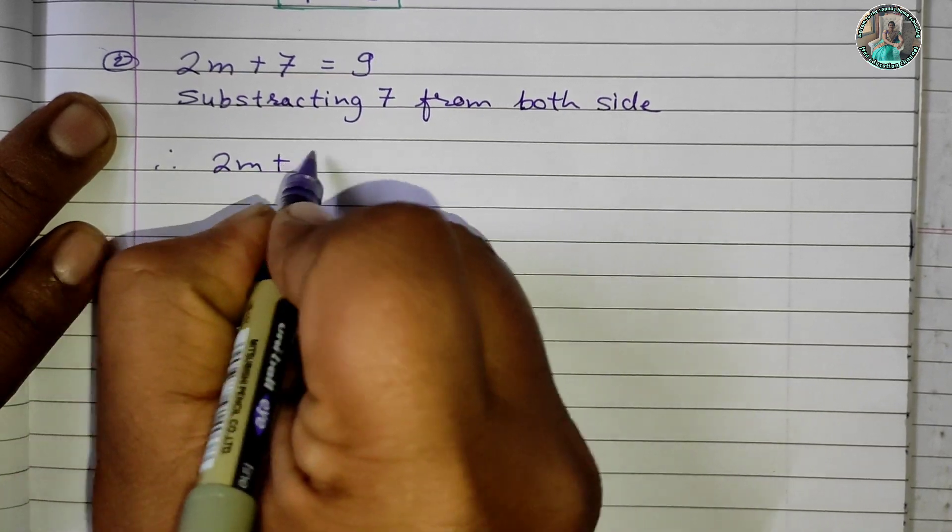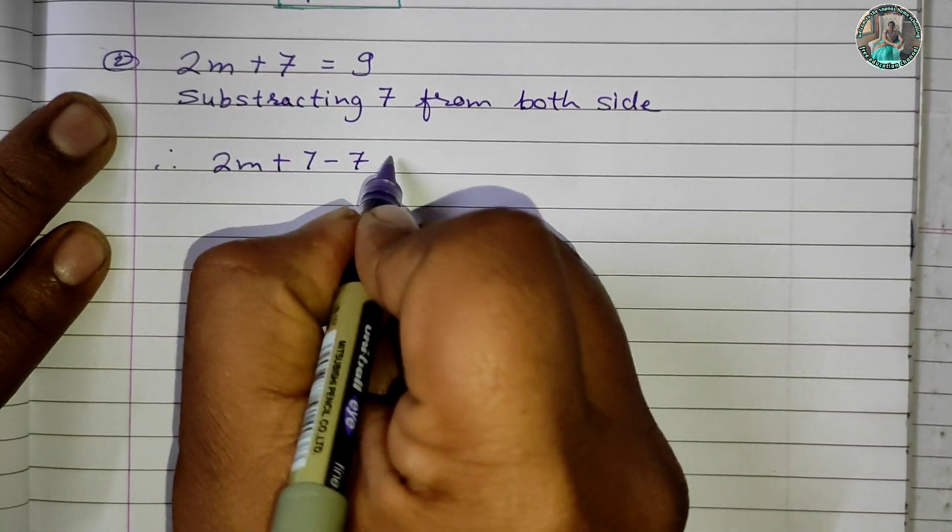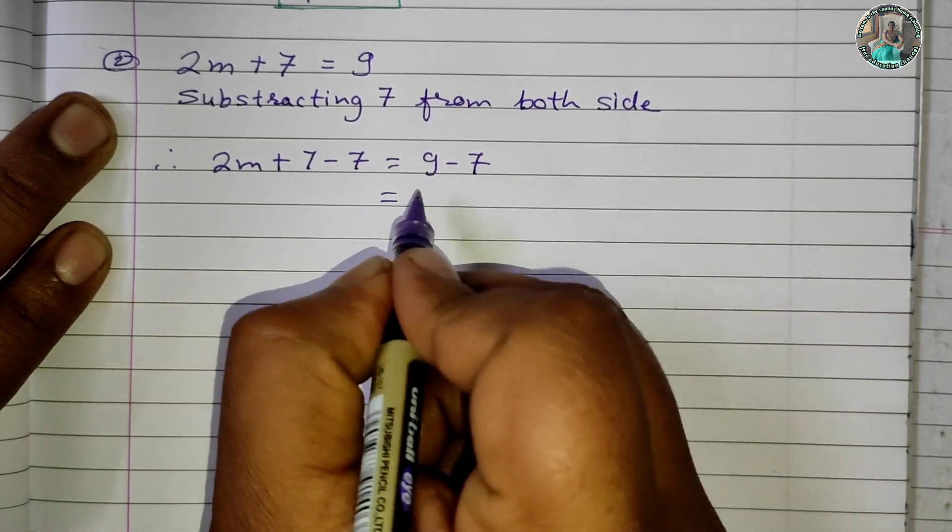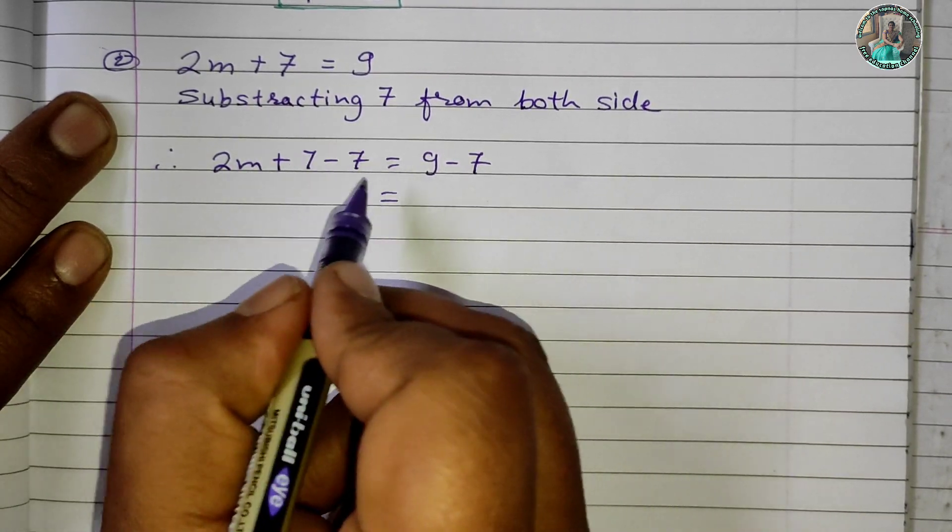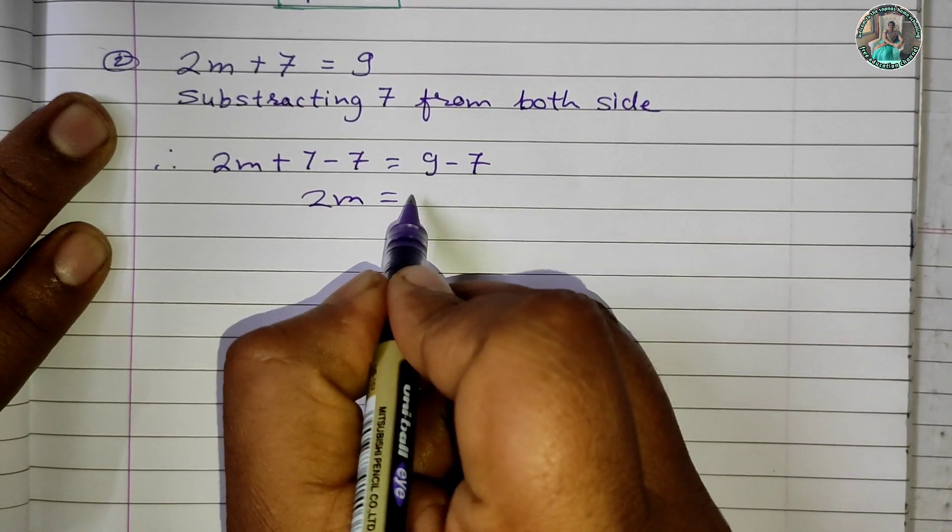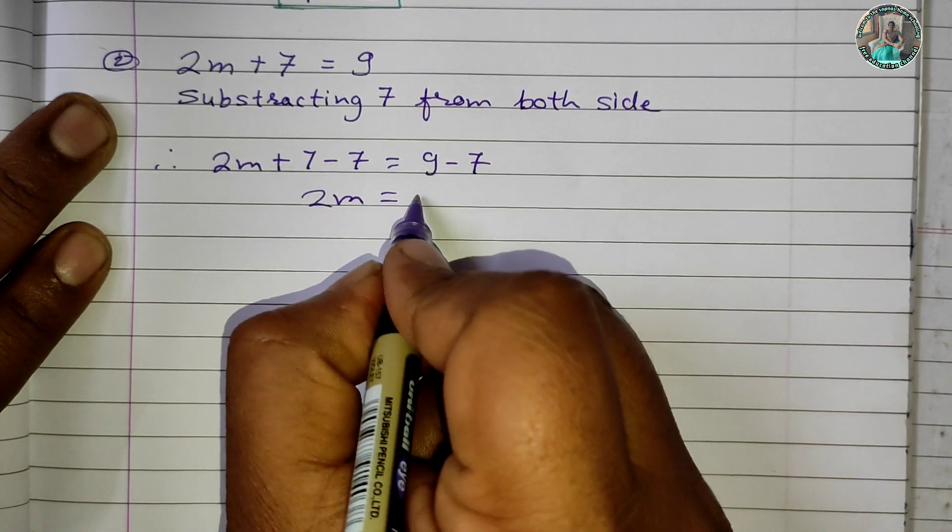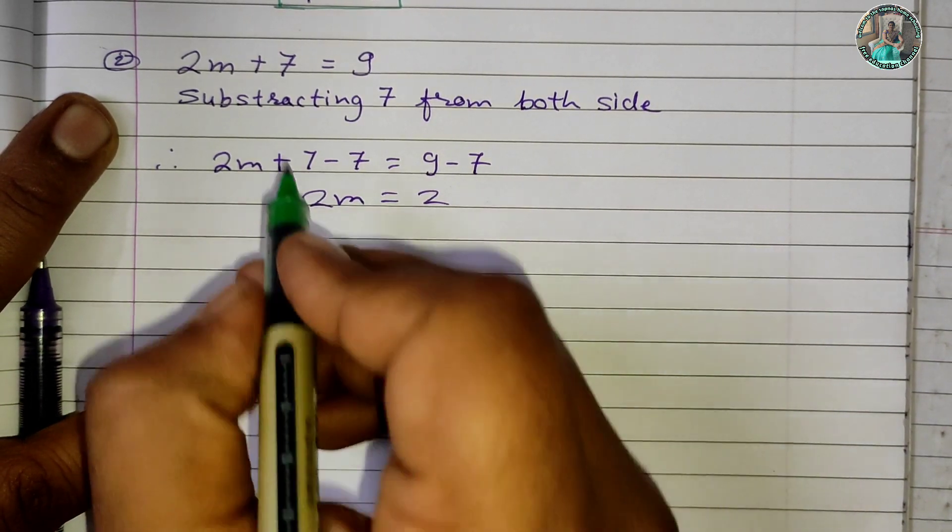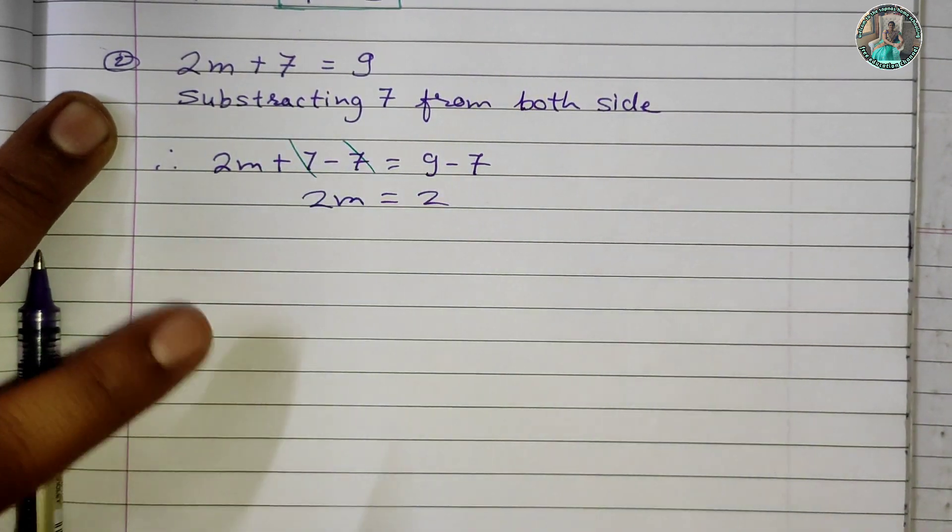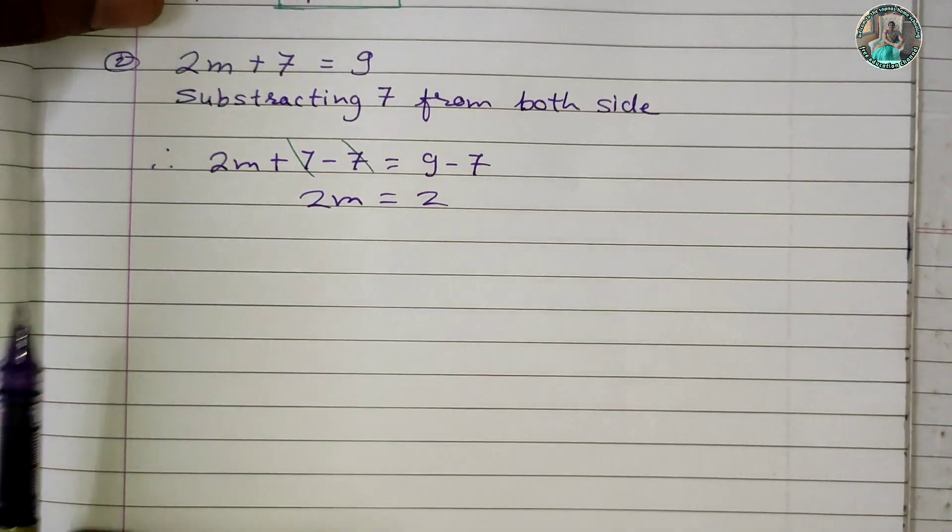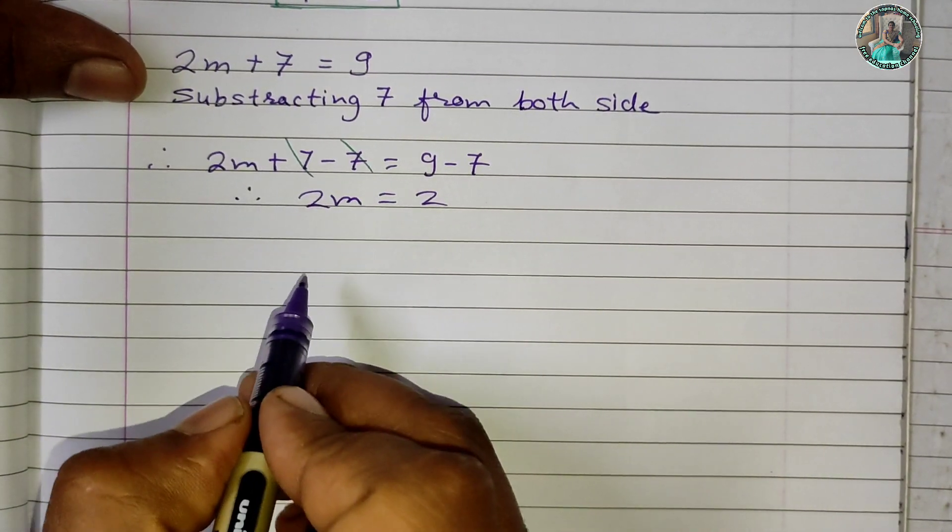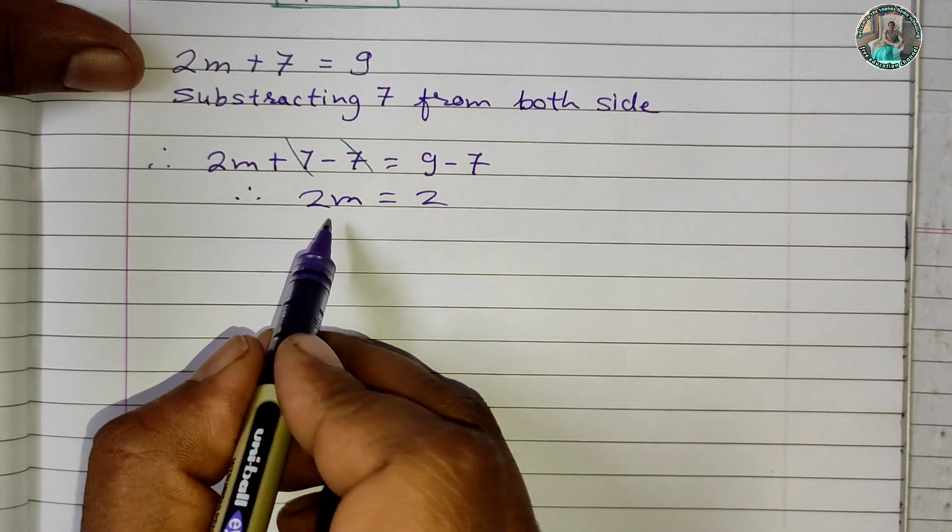Subtracting 7 from both sides: 2m + 7 - 7 = 9 - 7. We get 2m = 2, since 7 - 7 cancels out.